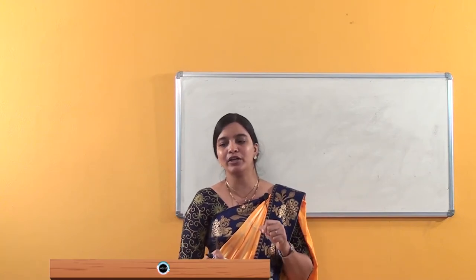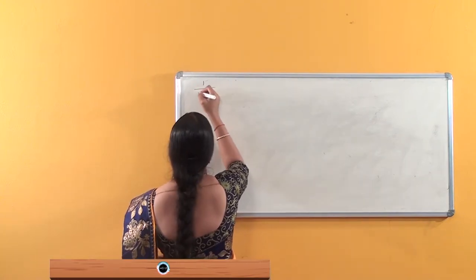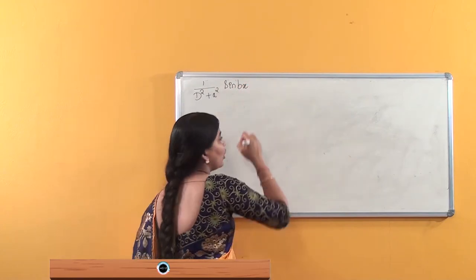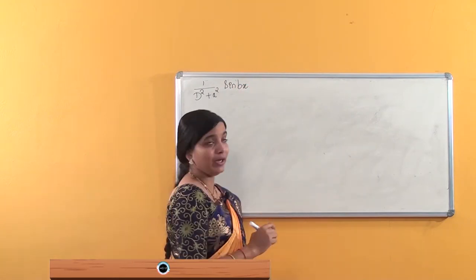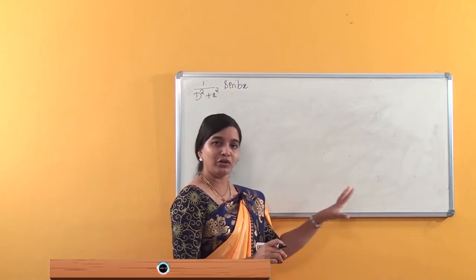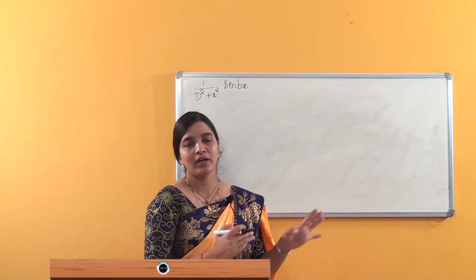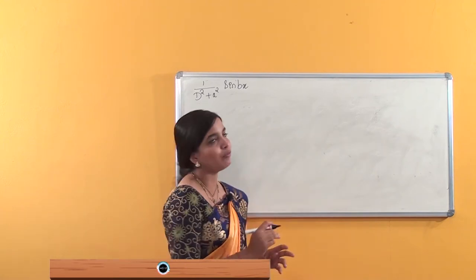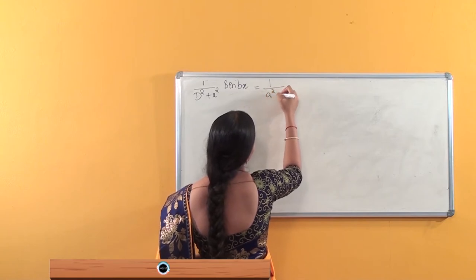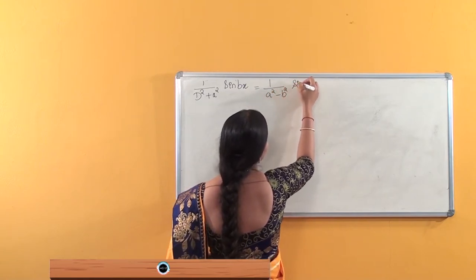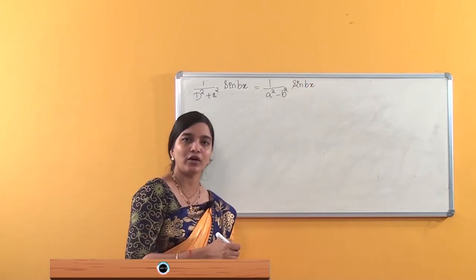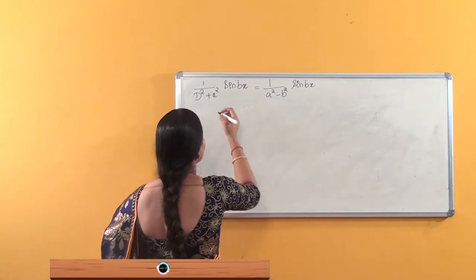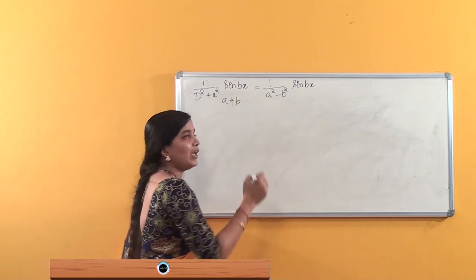We were dealing with the evaluation of 1/(D²+a²)·sin(bx) or 1/(D²+a²)·cos(bx). We already found the formula in our last session and solved some problems. The formula is 1/(a²−b²)·sin(bx), and for cos it is 1/(a²−b²)·cos(bx).